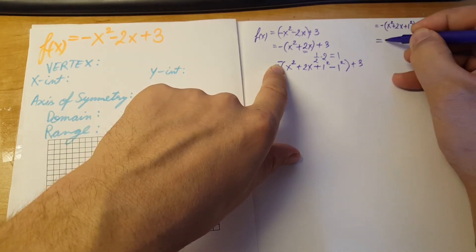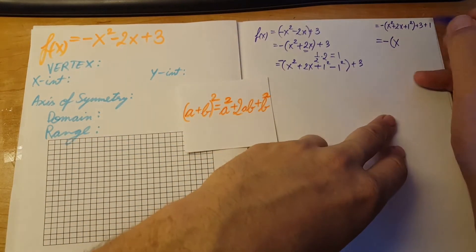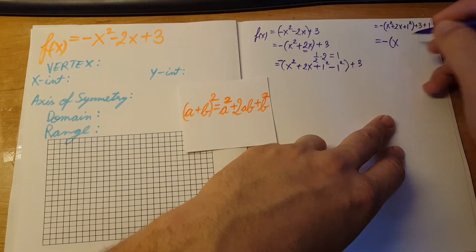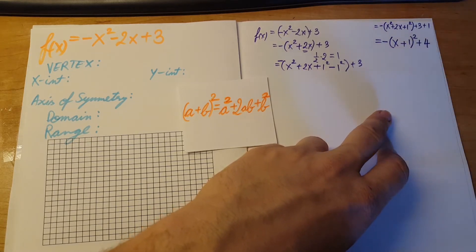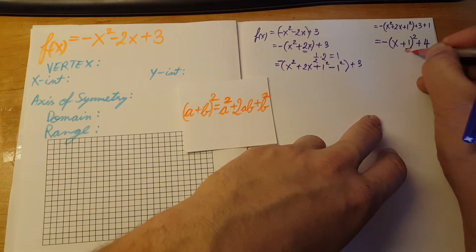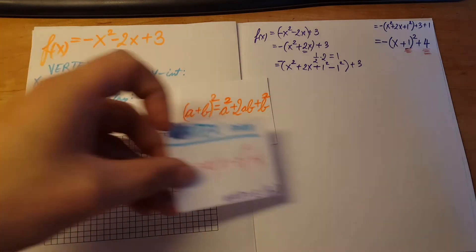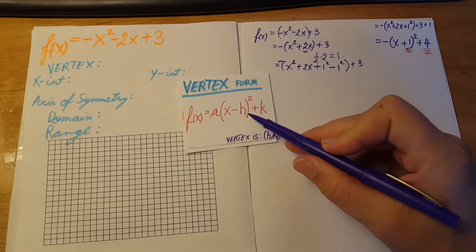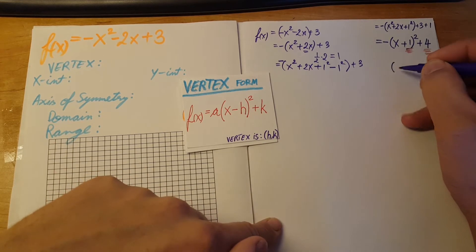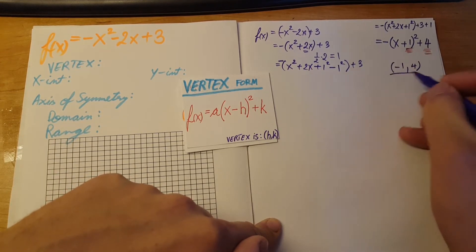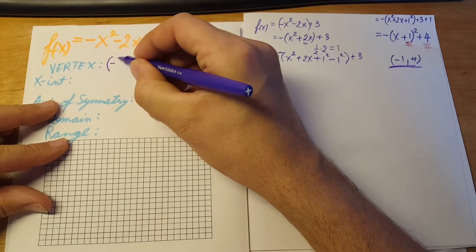Let's clean it up. We're going to use the completing the square formula. So the vertex form is: negative times (x plus 1) squared plus 4. We found the vertex form, and from here we can use these two values to find the vertex. Here's our vertex formula — h and k will be our vertex. So our vertex is at (negative 1, 4). I'm going to write this over here: vertex: (−1, 4).